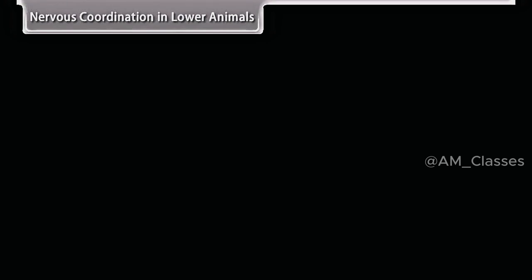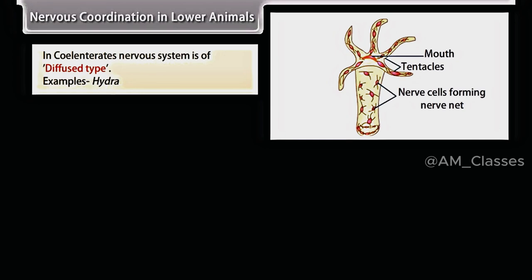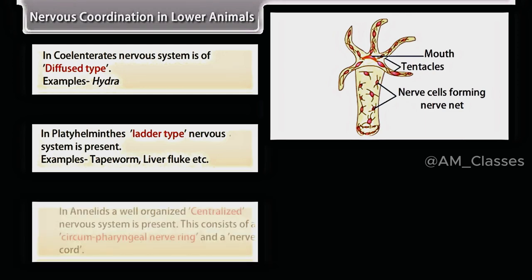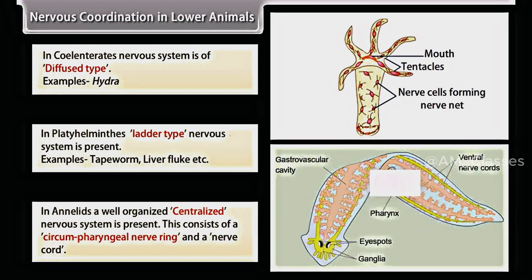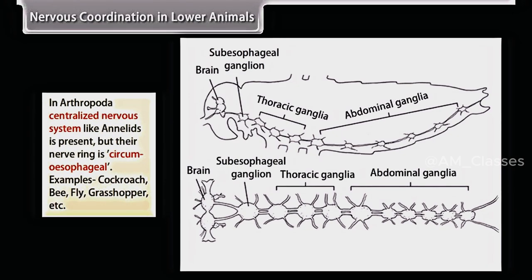In coelenterates, the nervous system is of diffused type — example: hydra. In platyhelminthes, ladder type nervous system is present — examples: tapeworm, liver fluke, etc. In annelids, a well-organized centralized nervous system is present, consisting of a circumpharyngeal nerve ring and a nerve cord. In arthropoda, a centralized nervous system like annelids is present, but their nerve ring is circumesophageal.